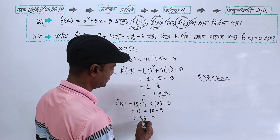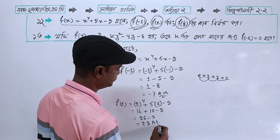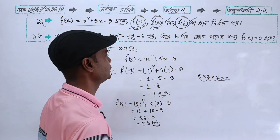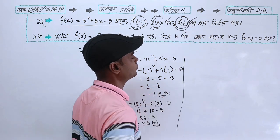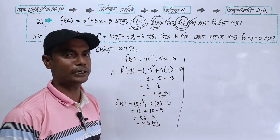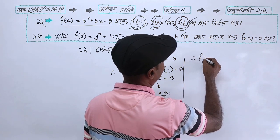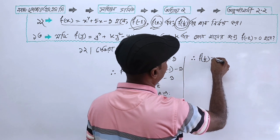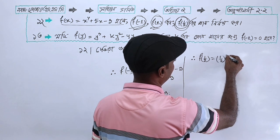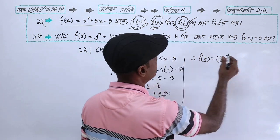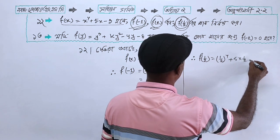Now evaluating f(1/2): x equals 1 divided by 2. The function at x equals 1 divided by 2 gives us (1/2) to the power 4 plus 5 into x equals 1 divided by 2, minus 3.